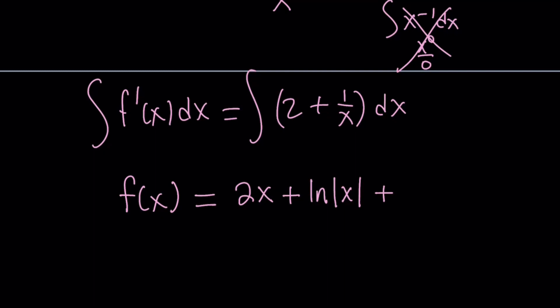we have to add a constant at the end because these are indefinite integrals. You don't need constants on both sides because if you have constants on both sides, you can absorb them into a single constant. So this is an expression for f of x.